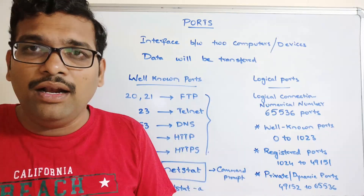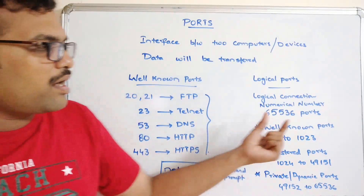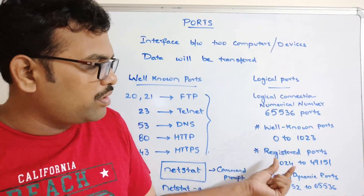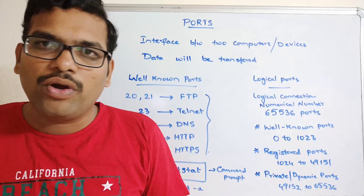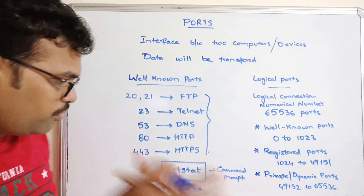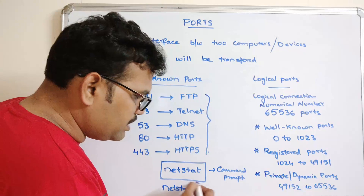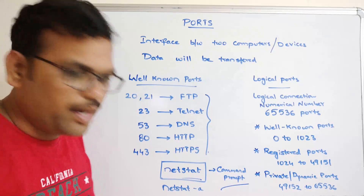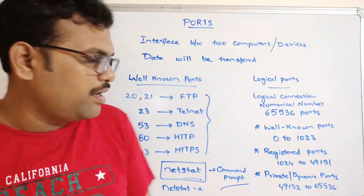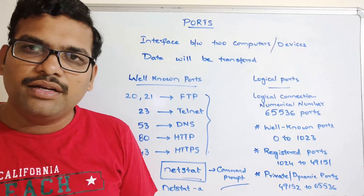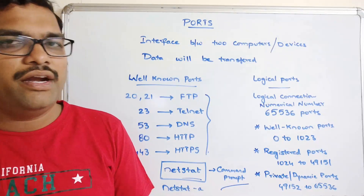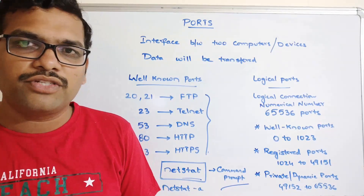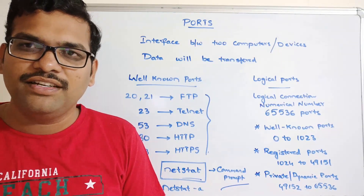In total there are 65,536 ports — categorized into well-known, registered, and private/dynamic ports. Hope you understood the ports concept. Try the netstat command in the command prompt and share your experience in the comment box. If you enjoyed the session, like and share it with your friends. Post any doubts in the comment section and I'll try to clarify them. Don't forget to subscribe. Thanks for watching!